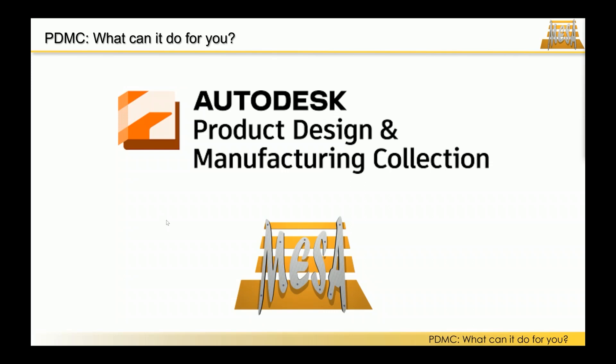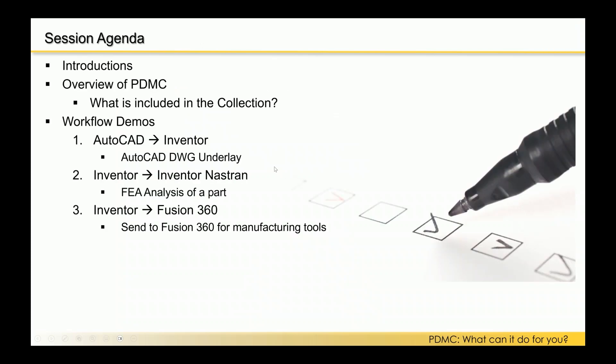This webinar is about the Autodesk Product Design and Manufacturing Collection. We'll run through a quick introduction and an overview of the collection, talk about what's included, and then get into some workflow demos. The demos are designed to get into the software — starting in AutoCAD, moving over to Inventor, and then looking at Inventor to Inventor Nastran and Inventor to Fusion 360. These are connected workflows you'll have access to with the collection, or if you're looking at moving up from a standalone seat of Inventor or AutoCAD.